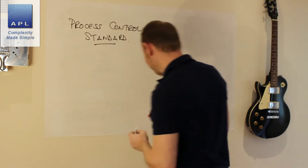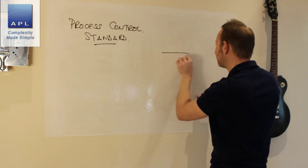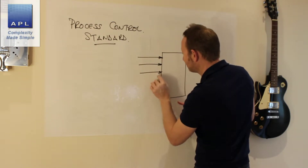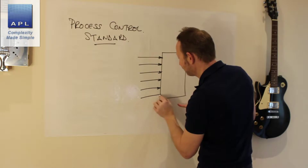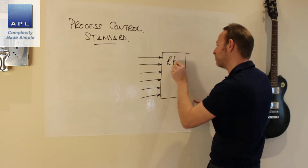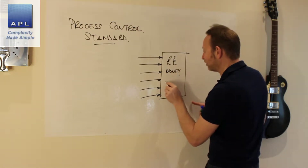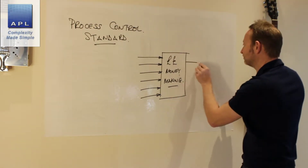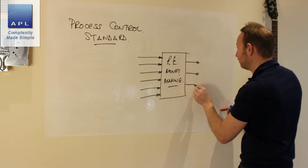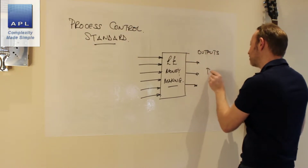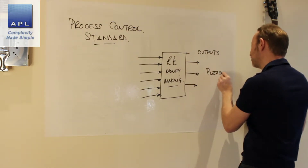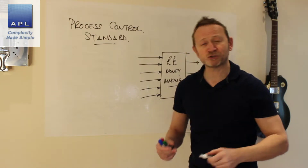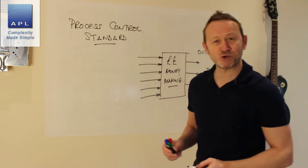A couple of things to say about getting a process under control. Every process is the same. You've got a money-making process with inputs — you have to fix the input somewhere. How do we design great standards so that it's clear and not ambiguous? We've got some outputs, and we're always trying to please the customer. We're trying to put great controls in place so that they work really well.